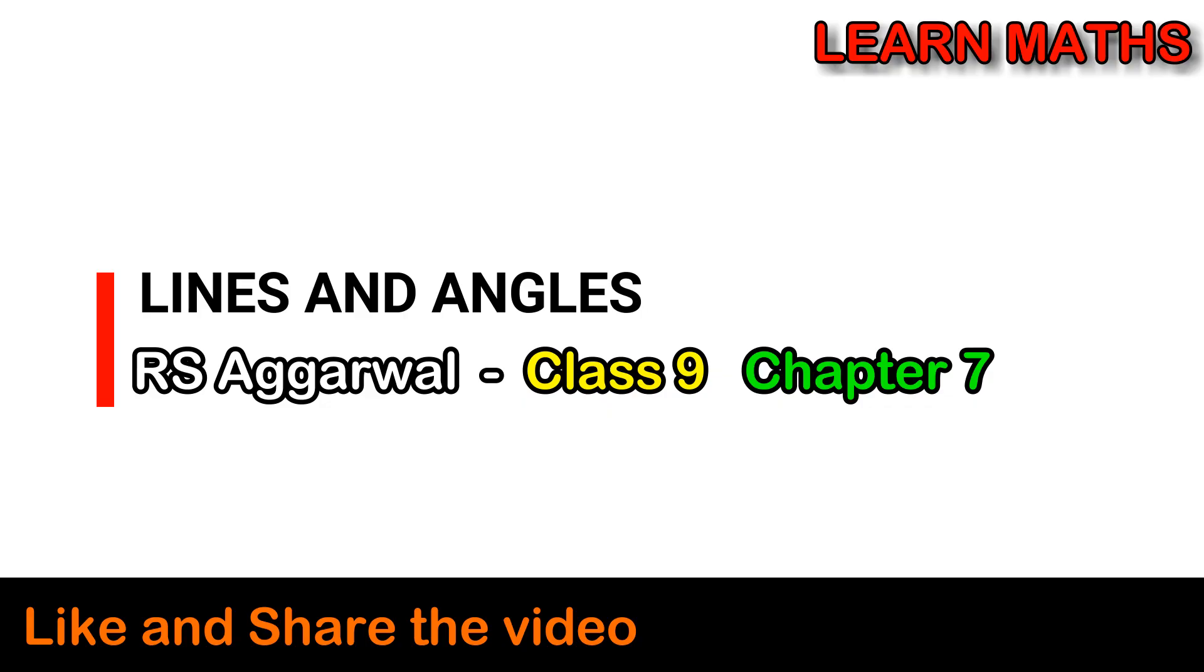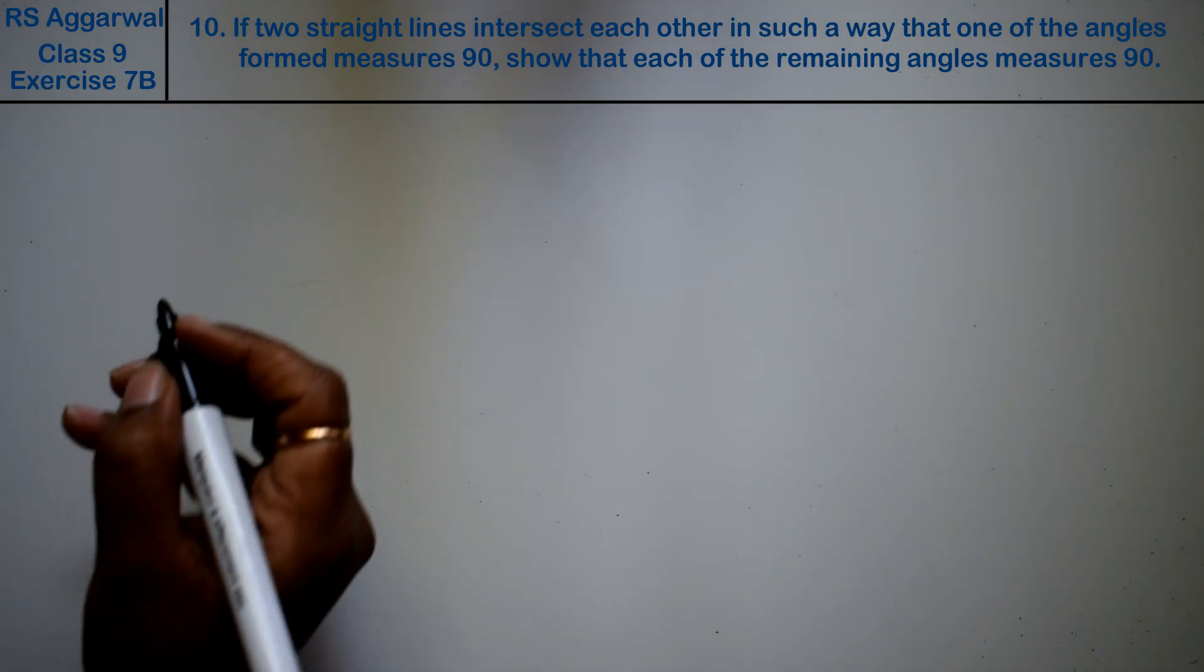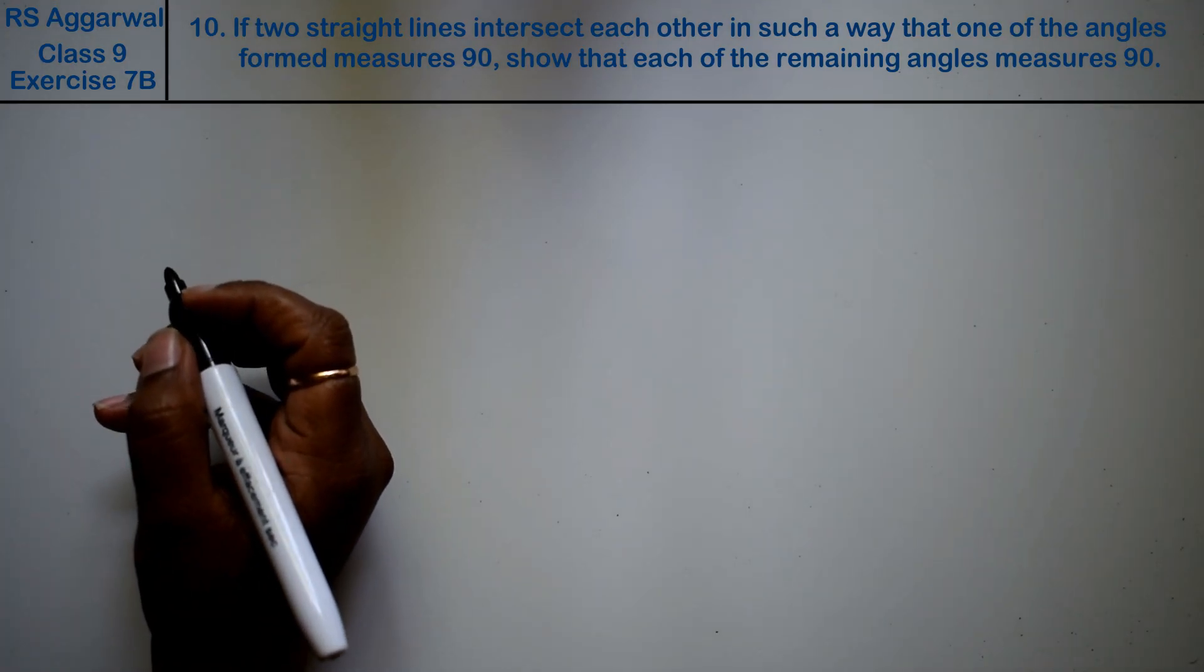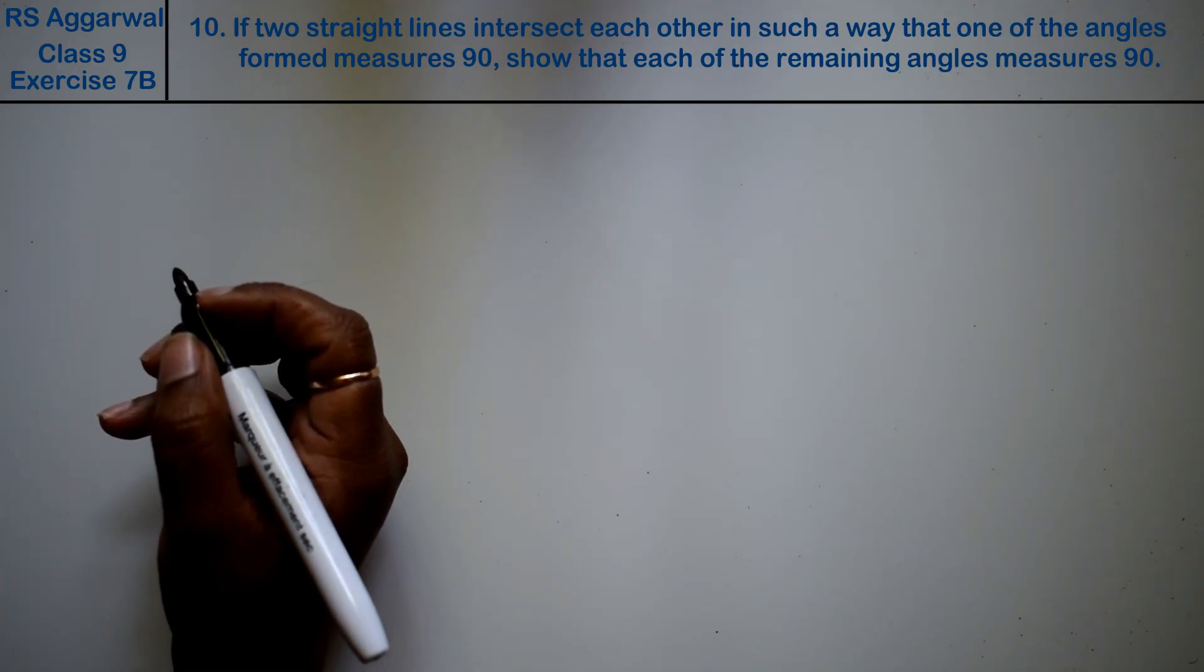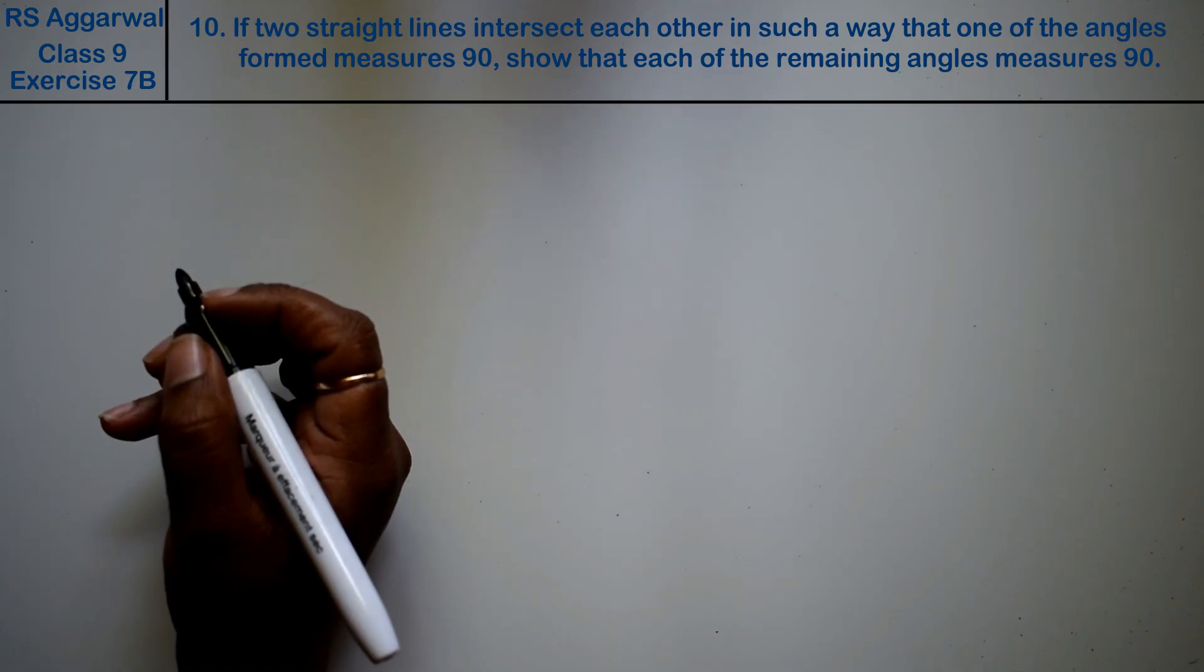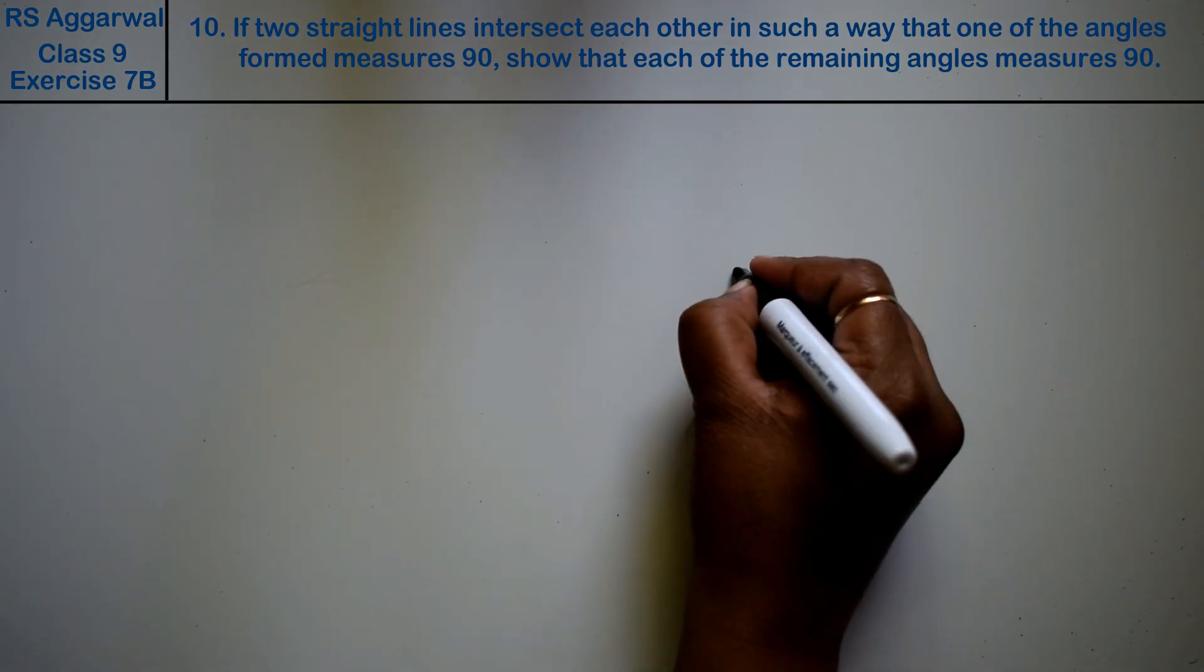Let's do question number 10 of exercise 7B on lines and angles. Question 10 states: if two straight lines intersect each other in such a way that one of the angles formed measures 90 degrees...